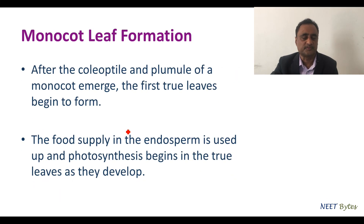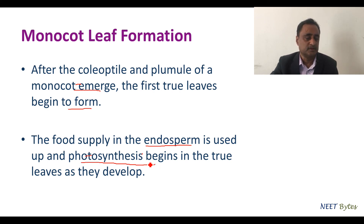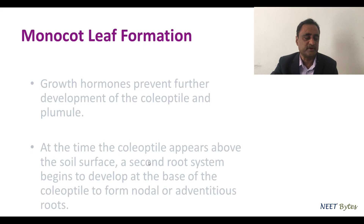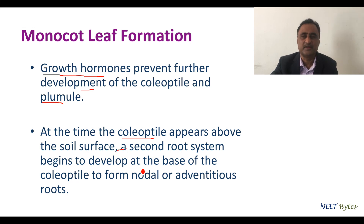In the case of monocot, once the coleoptile and plumule emerge, the first true leaf begins to form. The food supply is provided by the endosperm, and once the first leaf is formed, photosynthesis begins in the true leaf as it develops. Growth hormones prevent further development of the coleoptile and plumule, and a second root begins to develop at the base of the coleoptile, which later forms the fibrous or adventitious root system.